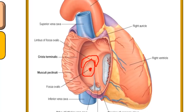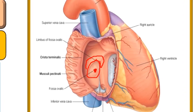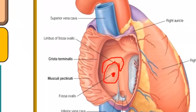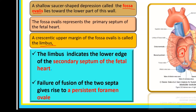In the development of the heart, at some point both the primary septum and the secondary septum will fuse. When they don't fuse, it leads to a pathological condition called the persistent foramen ovale.